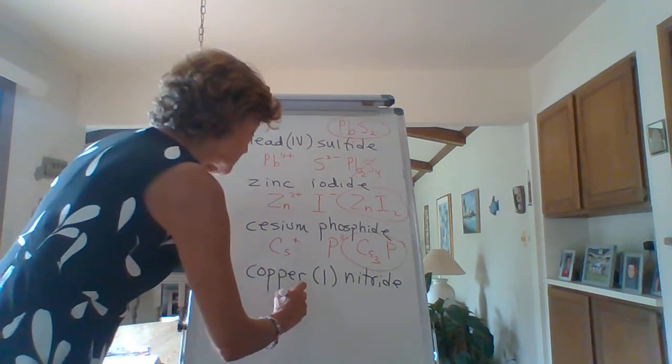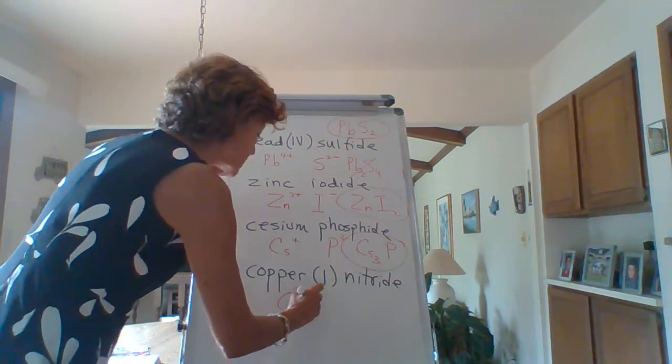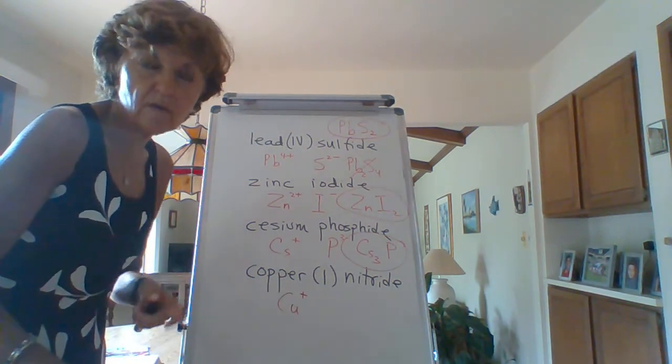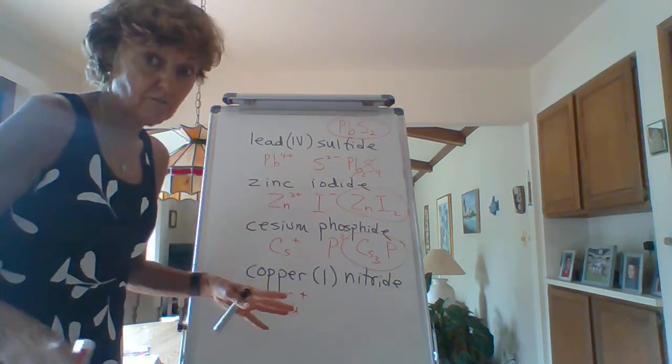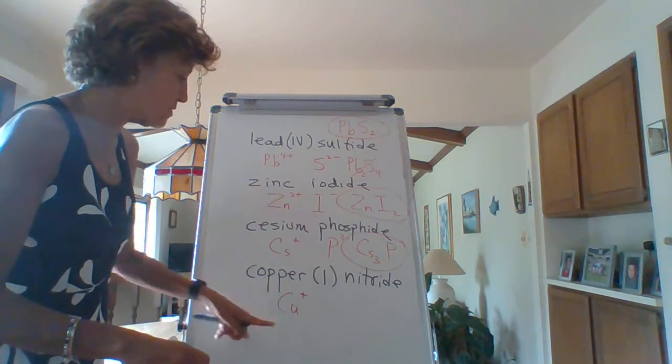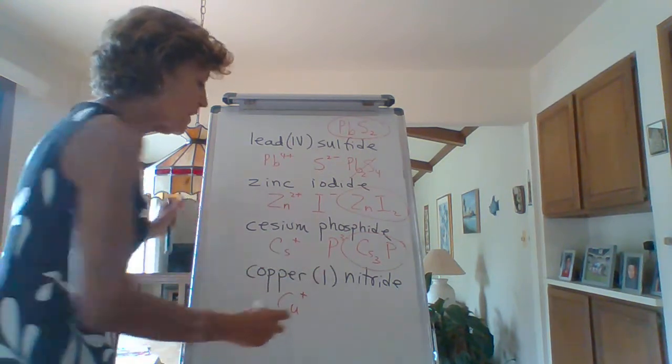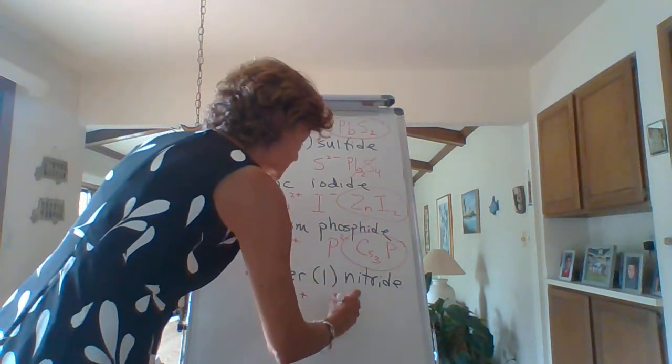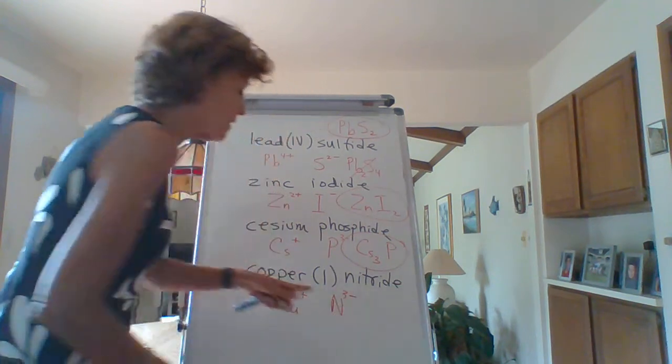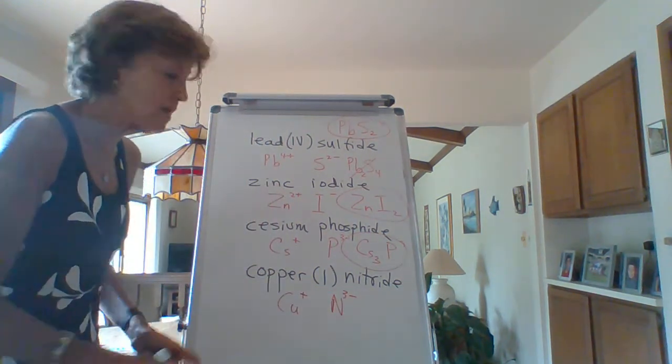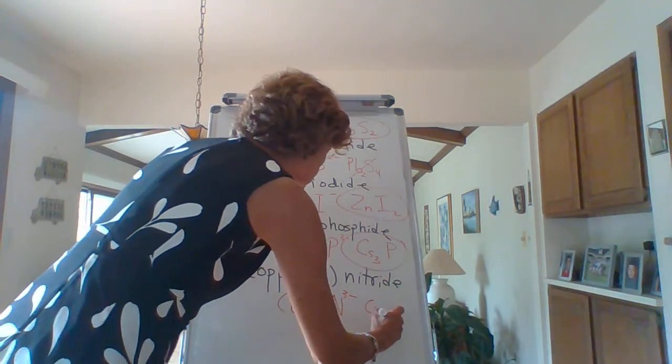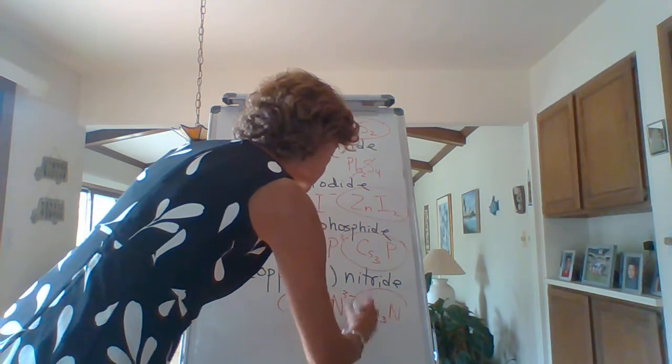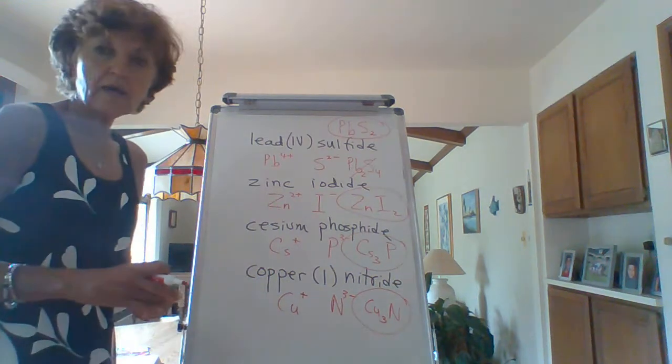And then finally, copper one nitride. And obviously, obviously, you need to know the symbols. Like if you're going to write Ca for copper, very big problem. So Cu plus one. Nitride, nitrogen picks up three electrons. So it's an anion that has a minus three. Crisscross, you end up with Cu3N.